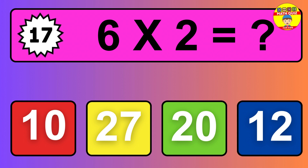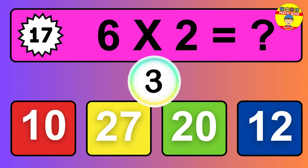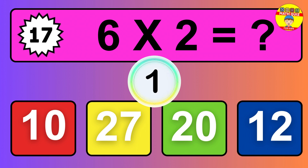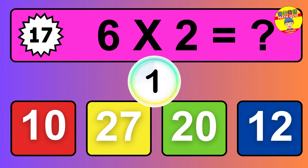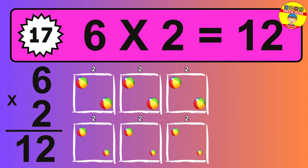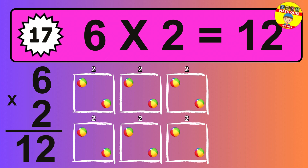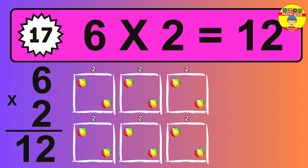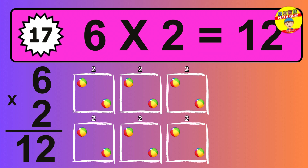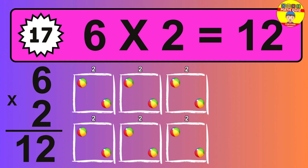Question seventeen. Six times two equals what? So the answer is six times two is 12. To calculate, we have six groups with two balls each one. So how many balls do we have? 12 balls.